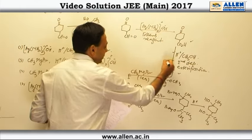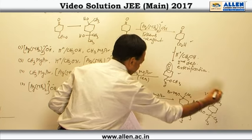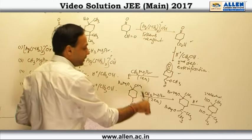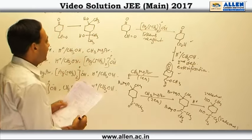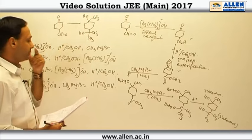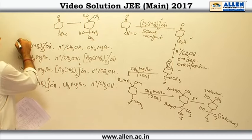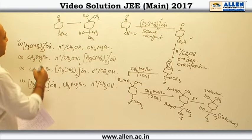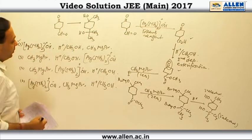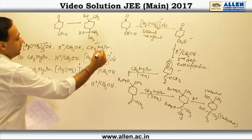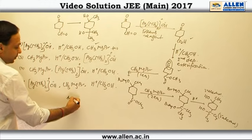Ketone, when it reacts with Grignard reagent, gives a tertiary alcohol, and ester when it reacts with excess Grignard again gives a tertiary alcohol — that is the final product given in the question. So according to the options: first is Tollens reagent, second is H⁺ and methanol, and third is Grignard reagent, which should be present in excess. The answer is option 1.